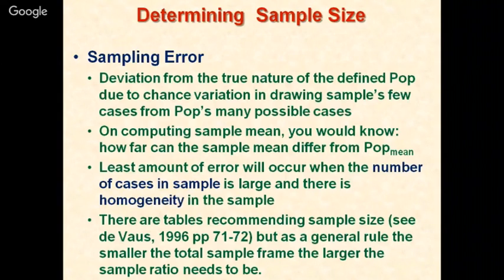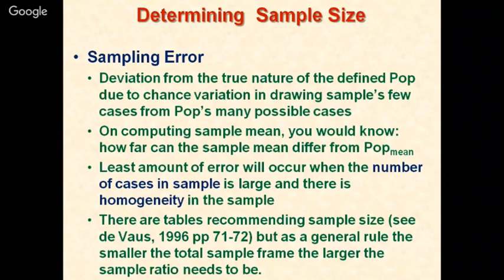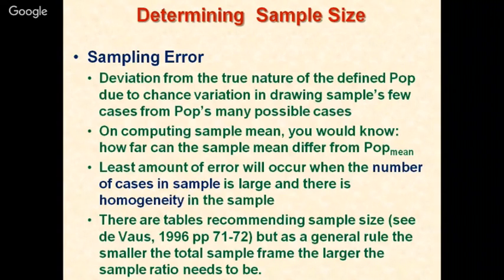On computing the sample mean, you can know how far it can differ from the population mean. The least amount of error will occur when the number of cases in the sample is large and there is homogeneity in the sample. Less sampling error results from a large sample where members are equated on various variables, ensuring the sample is homogeneous — for example, all members are male or all female, matched on certain characteristics.